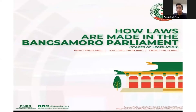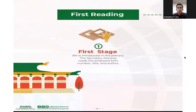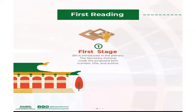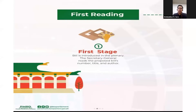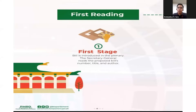Now let's move on to the main topic: how laws are made in the Bangsamoro Parliament. The process is almost similar to that observed in Congress. Under the Bangsamoro Organic Law, no bill shall become a law unless it has passed three readings on separate days, and printed copies have been distributed to members three days before its passage, except when the chief minister certifies the necessity of immediate enactment to meet a public calamity or emergency.